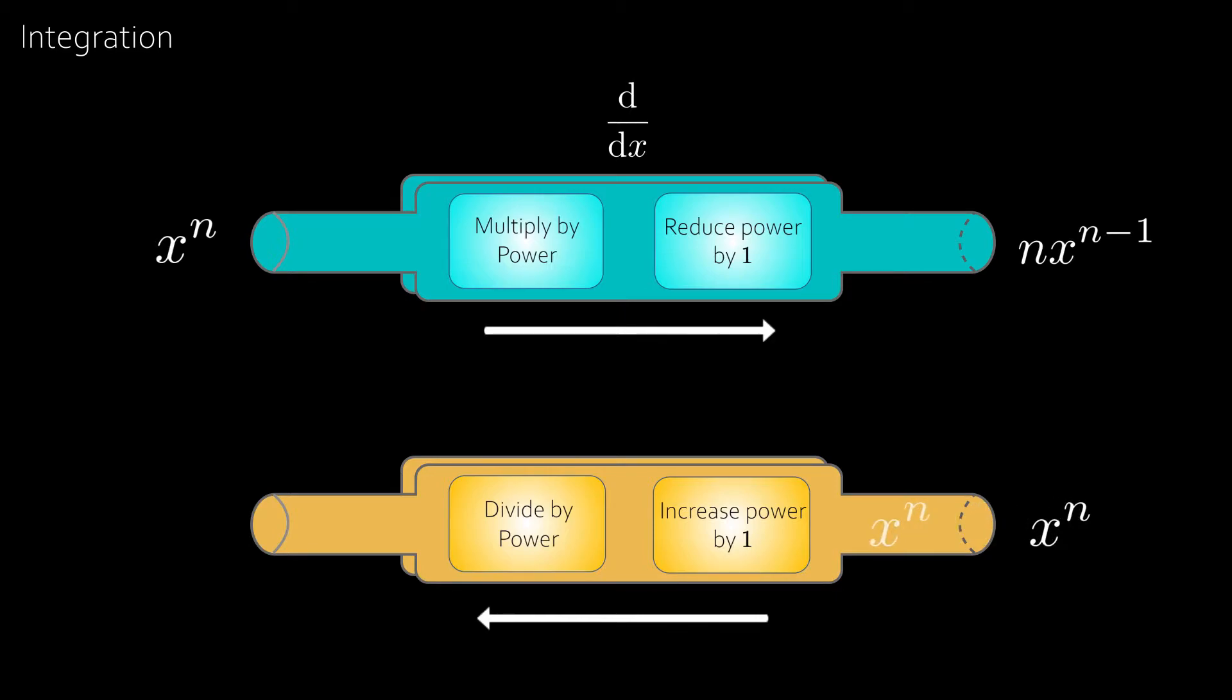Inputting x to the power of n into this machine spits out x to the n plus 1 divided by n plus 1. Which is the anti-derivative of x to the n.